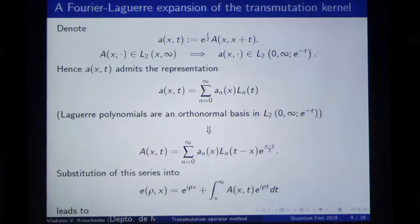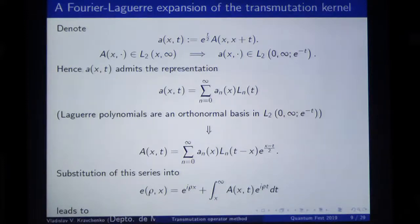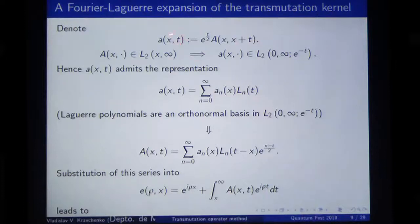Now what follows? I can tell you that only quite elementary tools are used, but the results are surprising. The first elementary tool is the following: from the fact that A is in the L2 space from x to infinity, it follows immediately that if I construct this auxiliary function A small, it will belong to this space L2 from 0 to infinity with this weight.